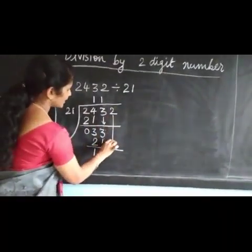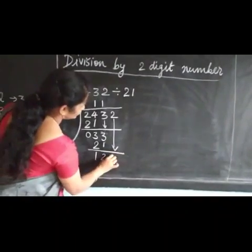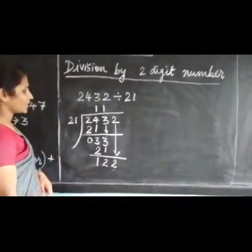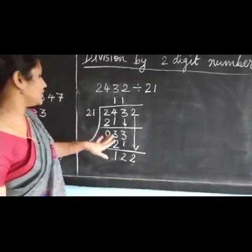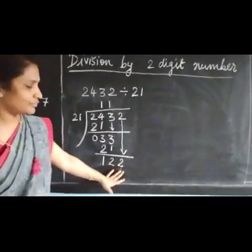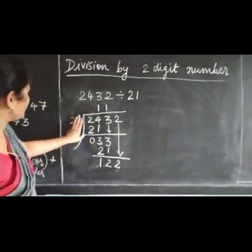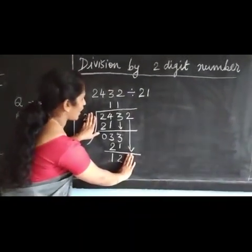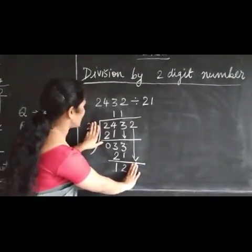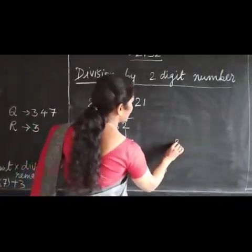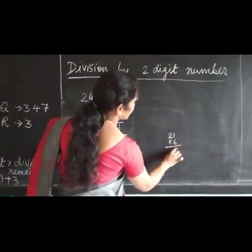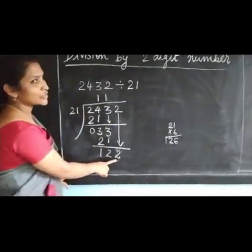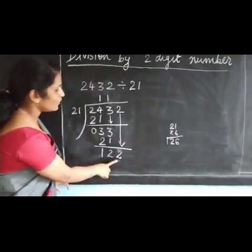Bring down the next number. Now it is 122. How many 21s are there in 122? We use the same guessing method: close the last digit of each number and see how many 2s are in 12. 6 twos are 12, so we try 21 times 6. 21 × 6 = 126. But we only have 122, not 126.